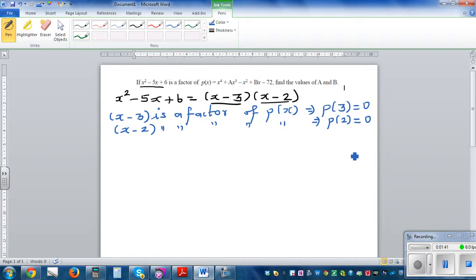Let's find p(3) first. p(3) would be 3 raised to 4, which is 81, plus 3 cubed is 27, so that's 27A minus 9 plus 3B minus 72 equals 0.